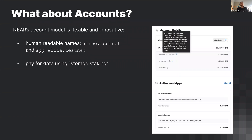You pay for data through storage staking. When you have an account, there is a minimum NEAR balance you must maintain depending on how much data your account holds. For example, an account holding around 20 kilobytes of data must keep about 20 cents worth of NEAR locked — that's 1 NEAR per 100 kilobytes, or 10 NEAR per megabyte. You can clear out data, contracts, or keys to reduce that storage staking amount.